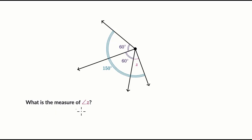We are asked, what is the measure of angle z? We can see angle z right over there. If you take the measure of angle z plus the 60 degree angle, plus this other 60 degree angle, we see all of those angles add up to 150 degrees.